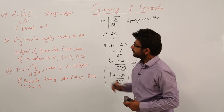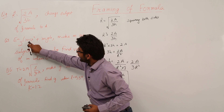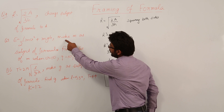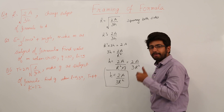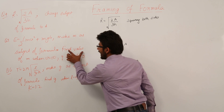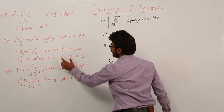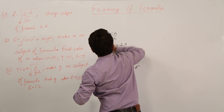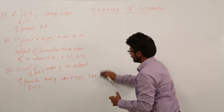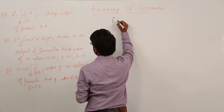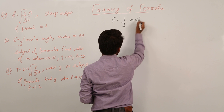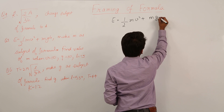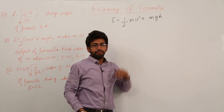Now let us see our fifth question: e is equal to half m into v squared plus m into g into h. We have to make m the subject of the formula, and also find the value of m when v equals 10, g equals 10, and h equals 5.